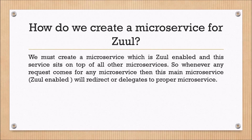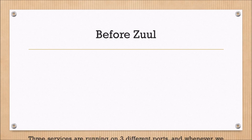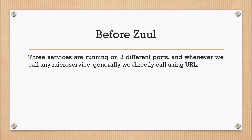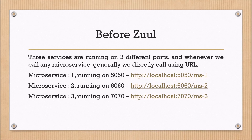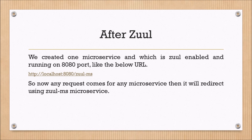To create a microservice for Zuul, we must create a microservice which is Zuul-enabled, and this service sits on top of all other microservices. Whenever any request comes for any microservice, this main Zuul-enabled microservice will redirect or delegate to the proper microservice. Here is the dependency for Netflix Zuul. Before Zuul, three services are running on three different ports and we directly call them using their URL. After Zuul, we create one Zuul-enabled microservice running on port 8080.